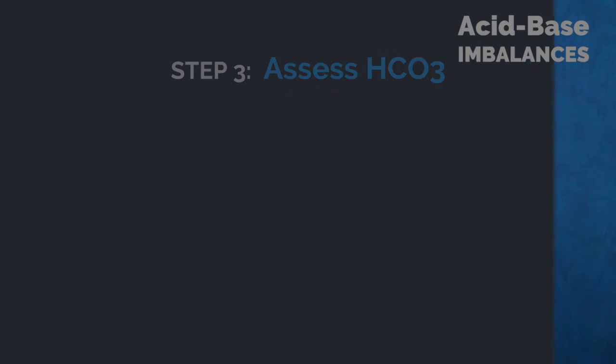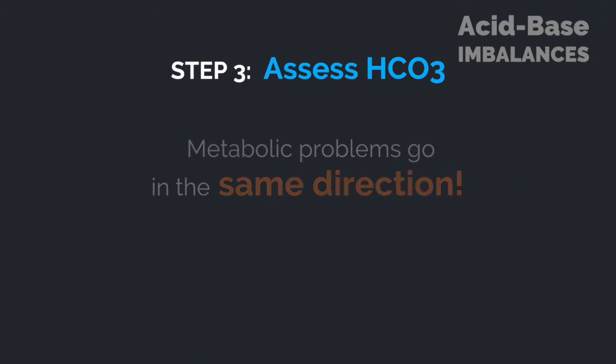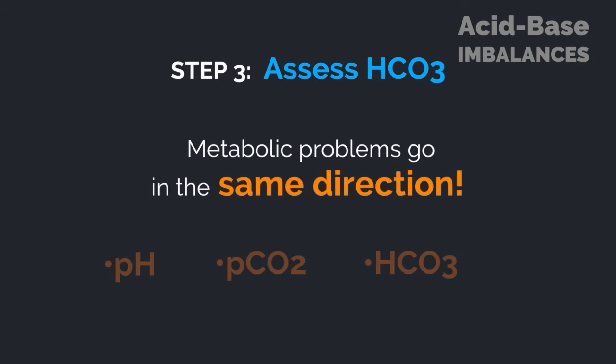What if CO2 and pH are both going in the same direction? Then we need to look at bicarb, HCO3, and only then. Metabolic acidosis and metabolic alkalosis are all going down-down-down or up-up-up together. It's really that simple. This approach will get you 80% of problems right every single time.